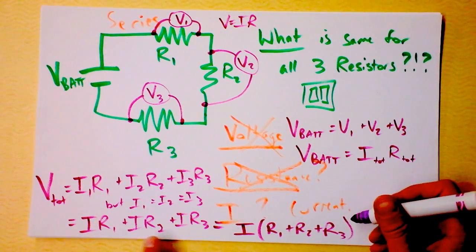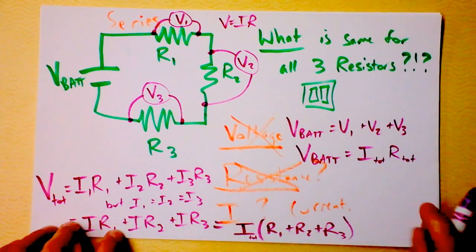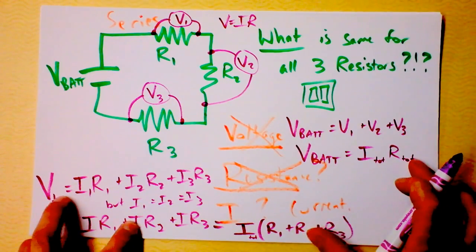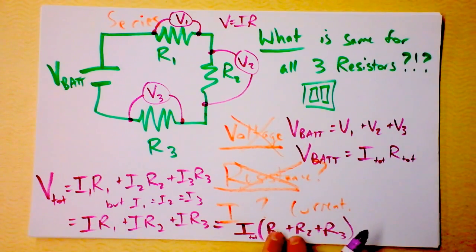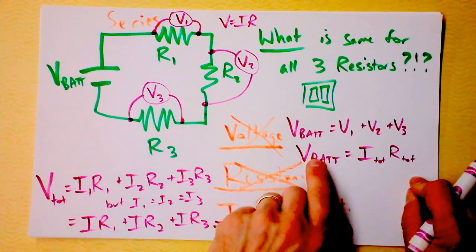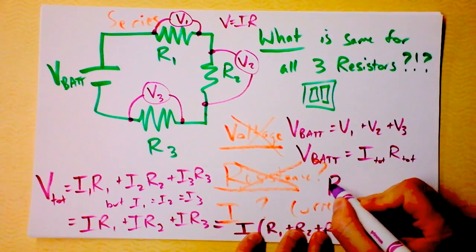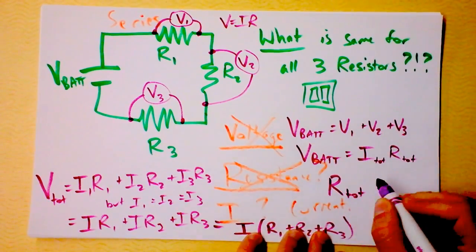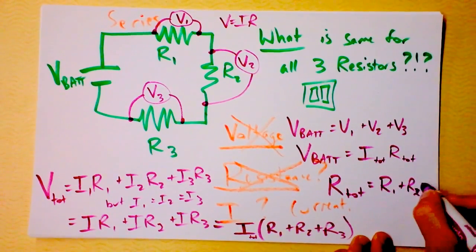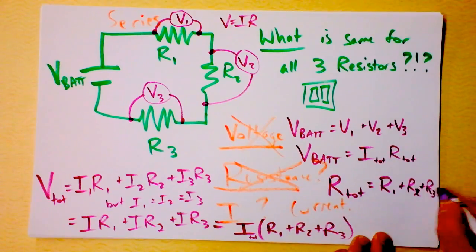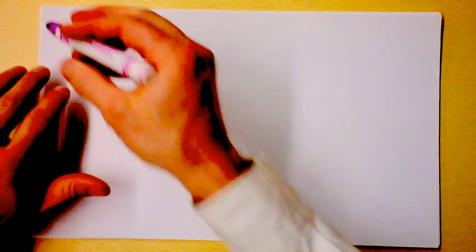And then, wait a second, this statement says, well, this is the total current, right? This statement compared to that statement shows me that, wait, this says V battery is I times all those resistances added together. And this says V battery is I times the total resistance. So I can make the conclusion that R total or R equivalent is, well, add those suckers up. R1 plus R2 plus R3. And that's true for series resistors. So that's kind of a messy slide. Let's just go to this one.